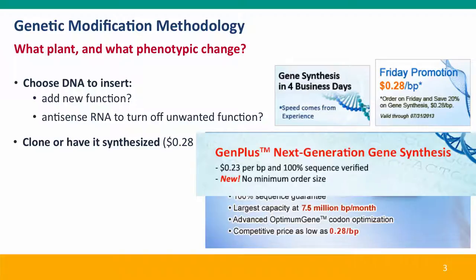Last year, the cheapest price was 28 cents a base pair. This year, we're down to 23 cents a base pair. This means that even a moderately large gene — one that might contain 1,000 amino acids — will not cost more than $1,000. That's cheap.